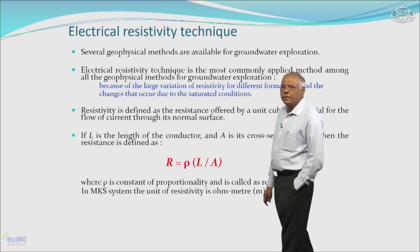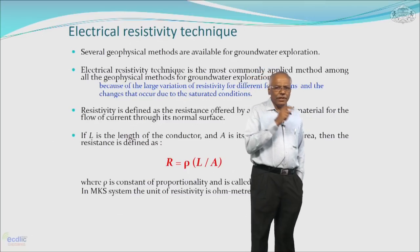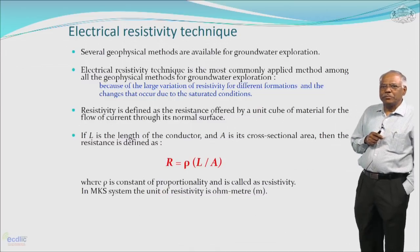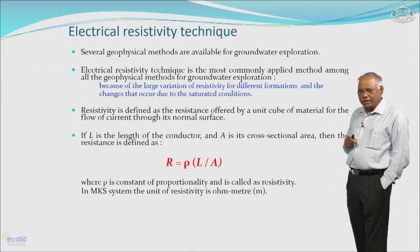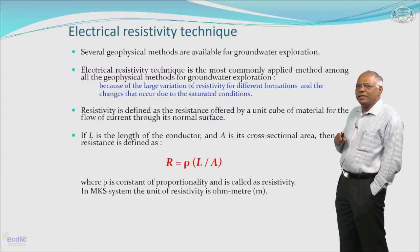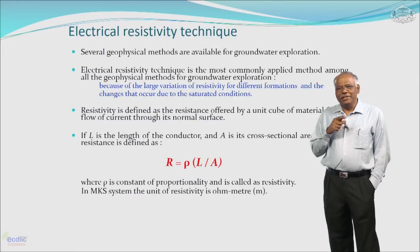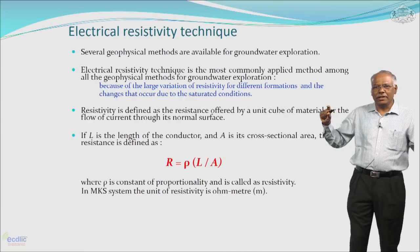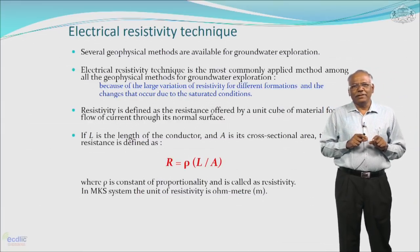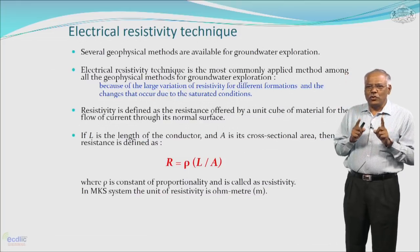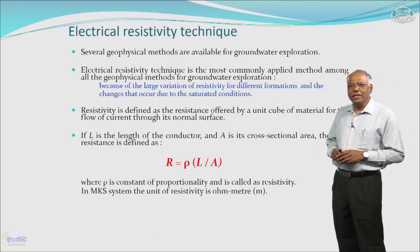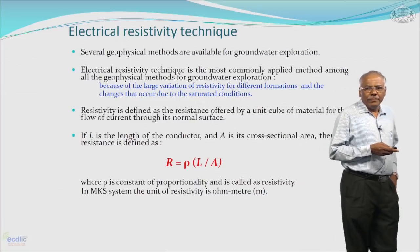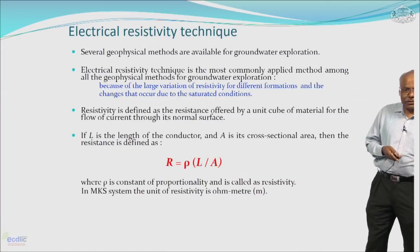The typical definition of resistivity is given in the presentation. If you consider L as the length of the conductor and A as the cross-sectional area, then the resistivity is given by R = ρL/A. L is the length of the conductor, A is the area, and based on the ratio L/A you can find out the resistivity of a given medium, which is measured with the help of this particular technique.